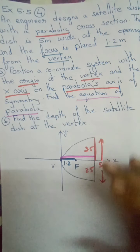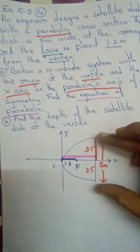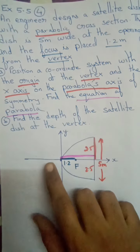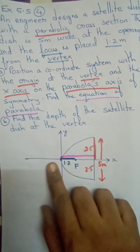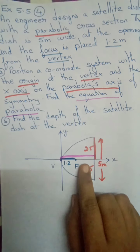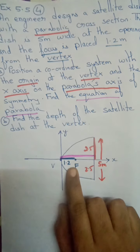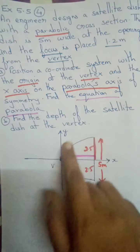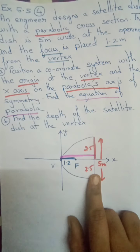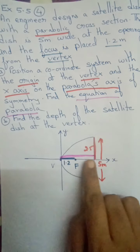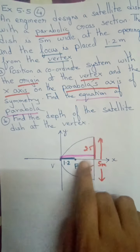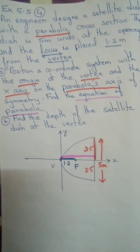The satellite width is 5 meters, so from the vertex the half-width is 2.5. The vertex is the origin, and the distance between the vertex and the focus is 1.2 meters. We need to find the parabola equation and the depth.